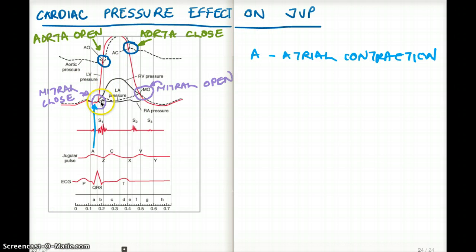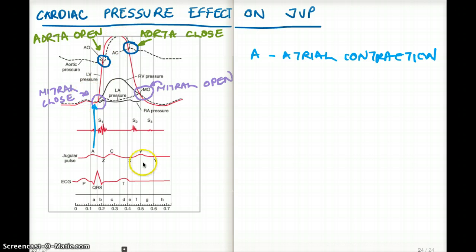After the mitral closes, the ventricular pressure starts increasing as the ventricle tries to push blood out onto the aorta. The pressure keeps increasing until the aorta opens. The ventricular pressure continues rising, spilling blood onto the aorta — that's systole. During systole, the bicuspid and tricuspid valves should be closed.